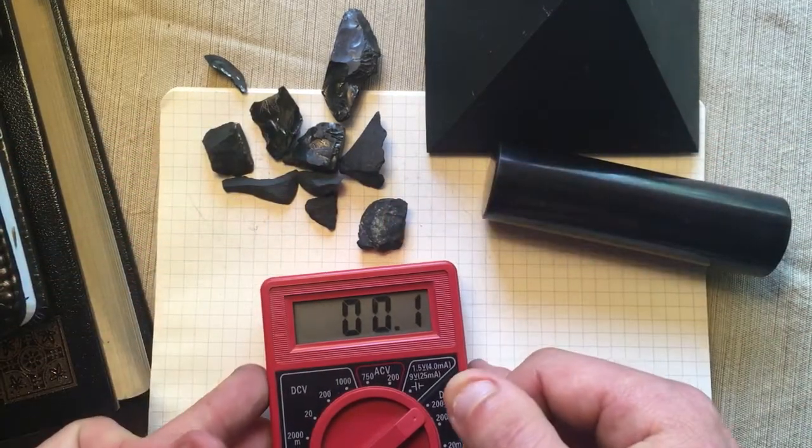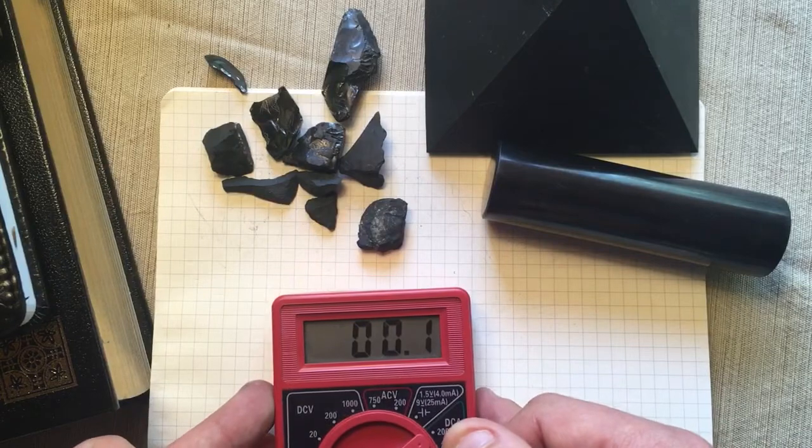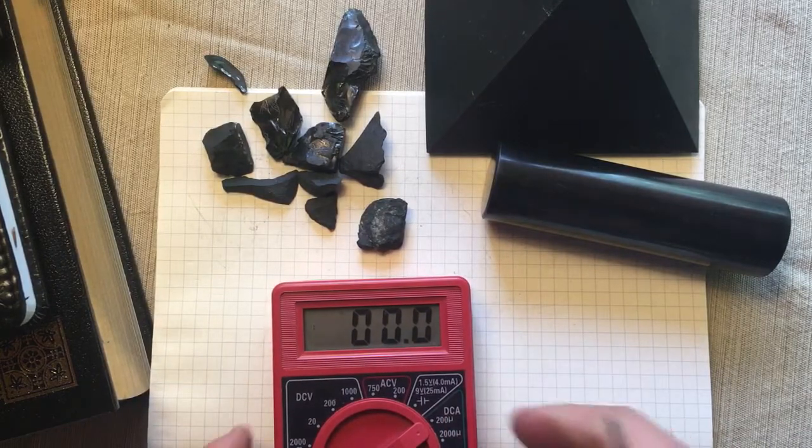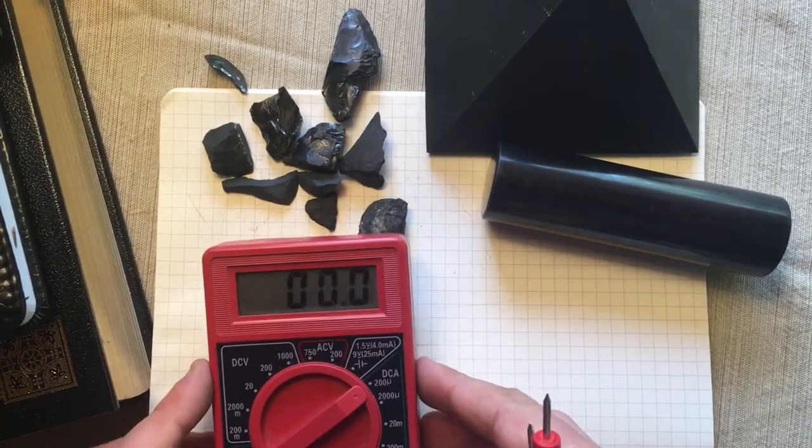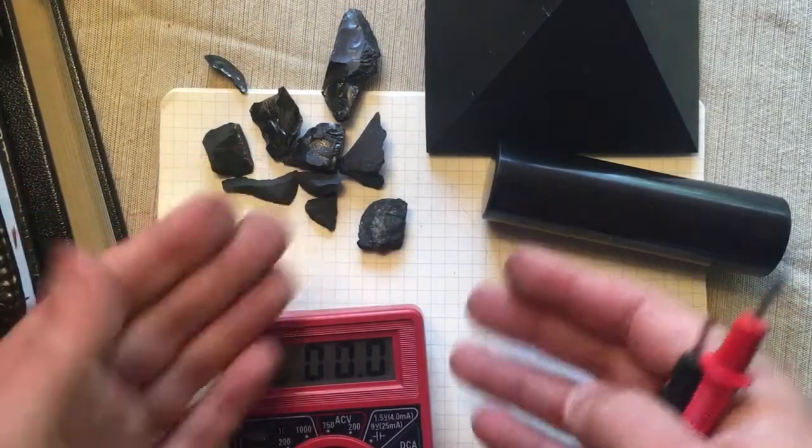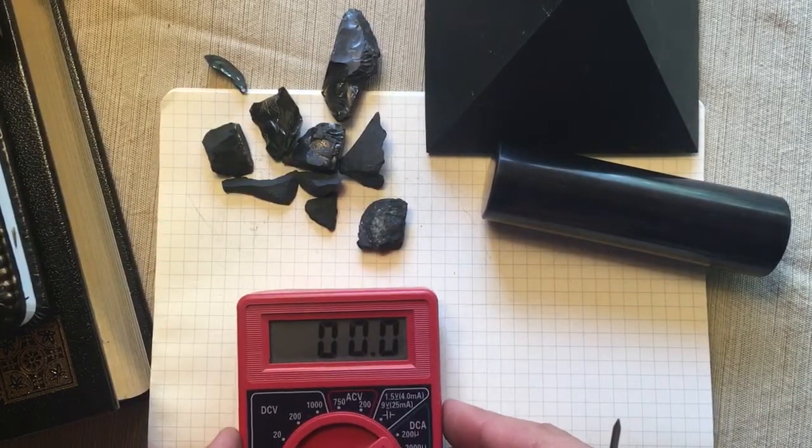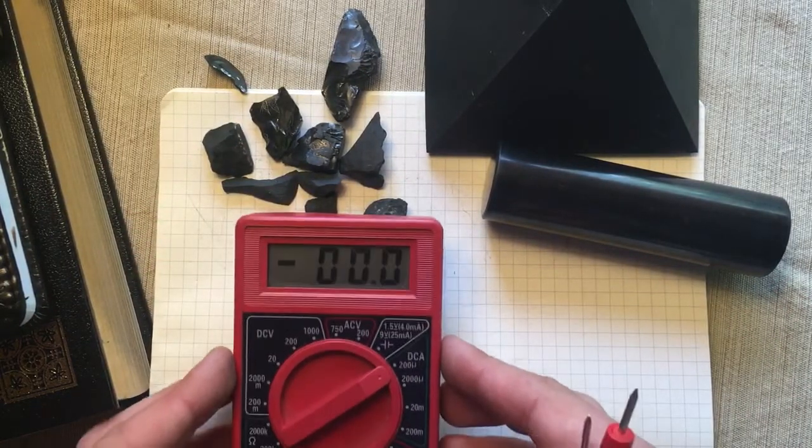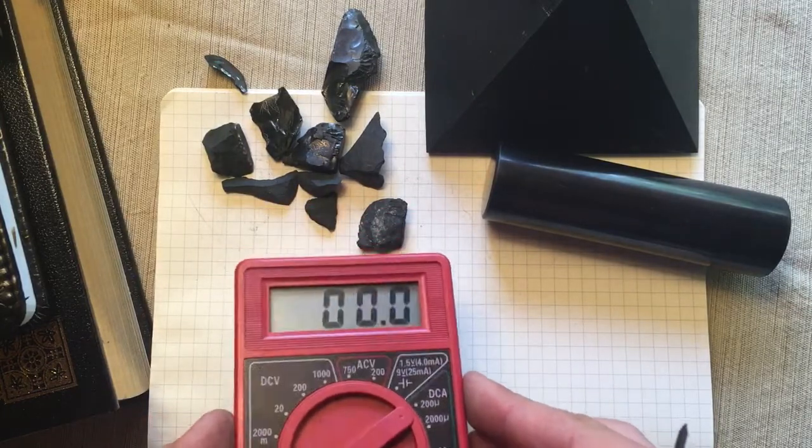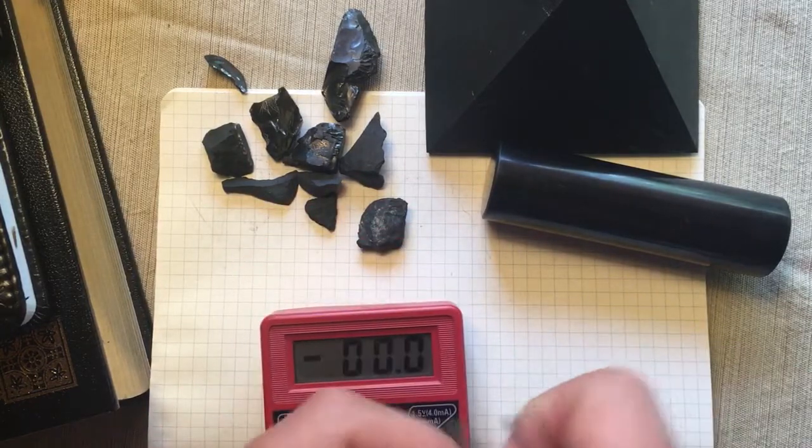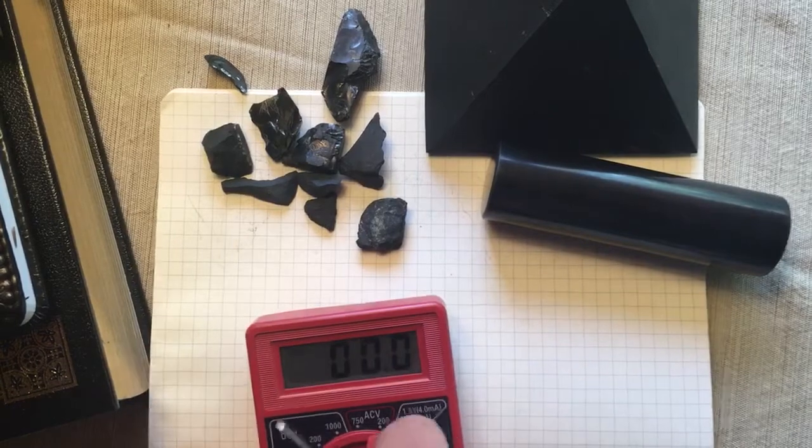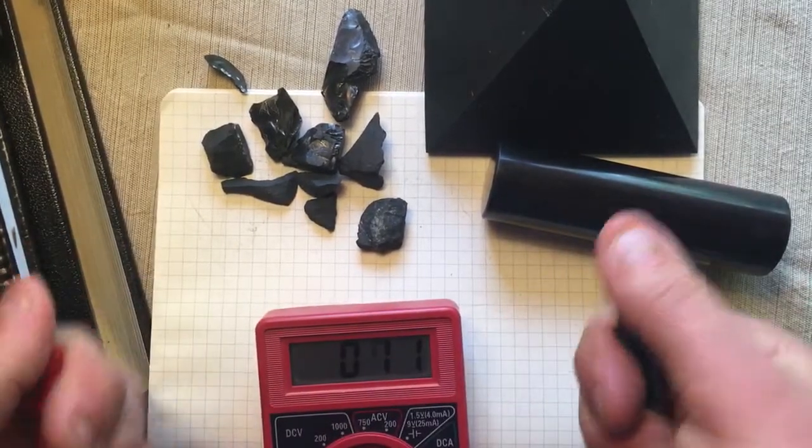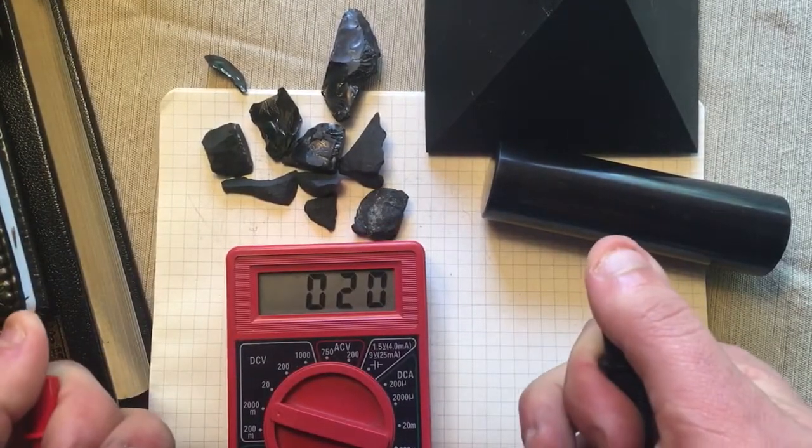So a significant increase in the current that my body is pushing just by picking up one of these magic rocks. You can replicate this yourself with a multimeter and some shungite. Can anyone explain the mechanism behind what is going on here? One more time, baseline reading.